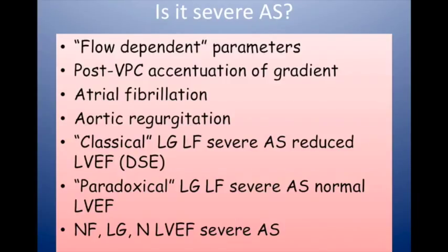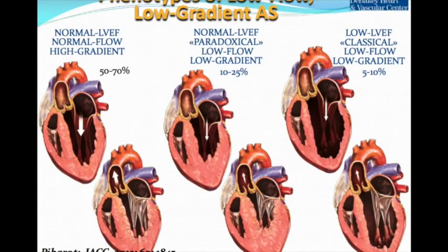These are the phenotypes you might encounter. On the left is the normal one — high gradient, normal flow, either impaired or normal LV function. On the right is the low-flow, low-gradient, low-ejection-fraction form where you can have severe AS even if the gradient is low, requiring dobutamine stress echo to distinguish severe from pseudo-severe. In the middle is the hypertrophied small ventricle with low stroke volume, low flow, therefore low gradient, but with a reduced area and normal LV function — that has to be severe.